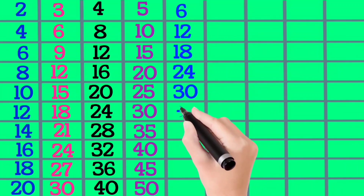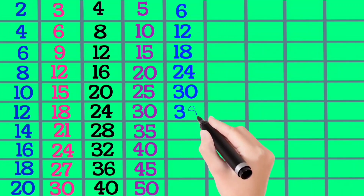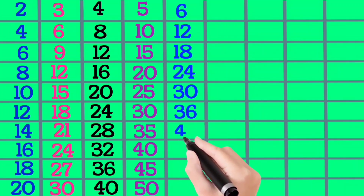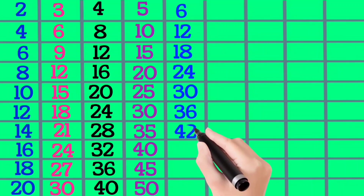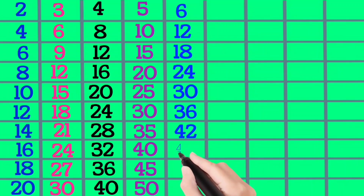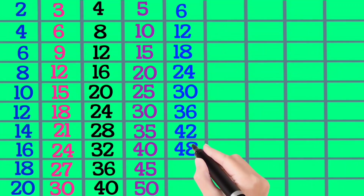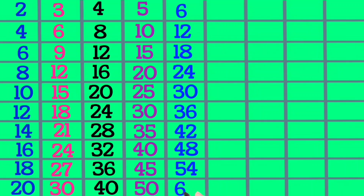6×6 is 36, 6×7 is 42, 6×8 is 48, 6×9 is 54, 6×10 is 60.